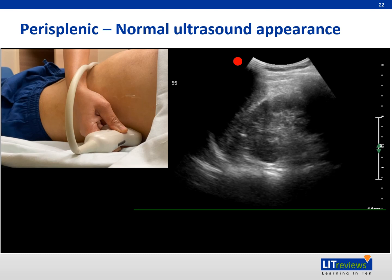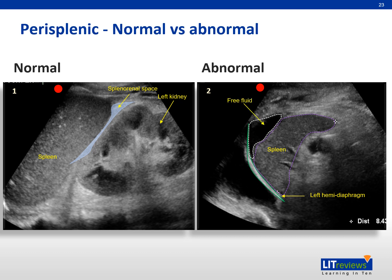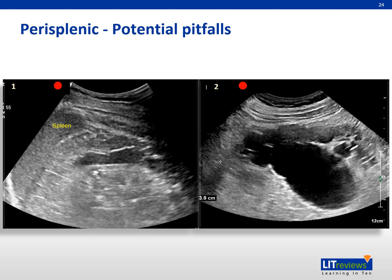Look out for free fluid in the splenorenal space. Small fluid collections may be found superior to the spleen at the interfaces between the left hemidiaphragm and the spleen, and at the splenorenal space. Perisplenic fluid and left pleural effusion are demonstrated in image 2. Image 1 shows an atrophic left kidney that appears so bright or hyperechoic that the surrounding perinephric fat appears dark, mimicking fluid collection with blood clot. Image 2 shows a fluid-containing cyst arising from the left kidney.